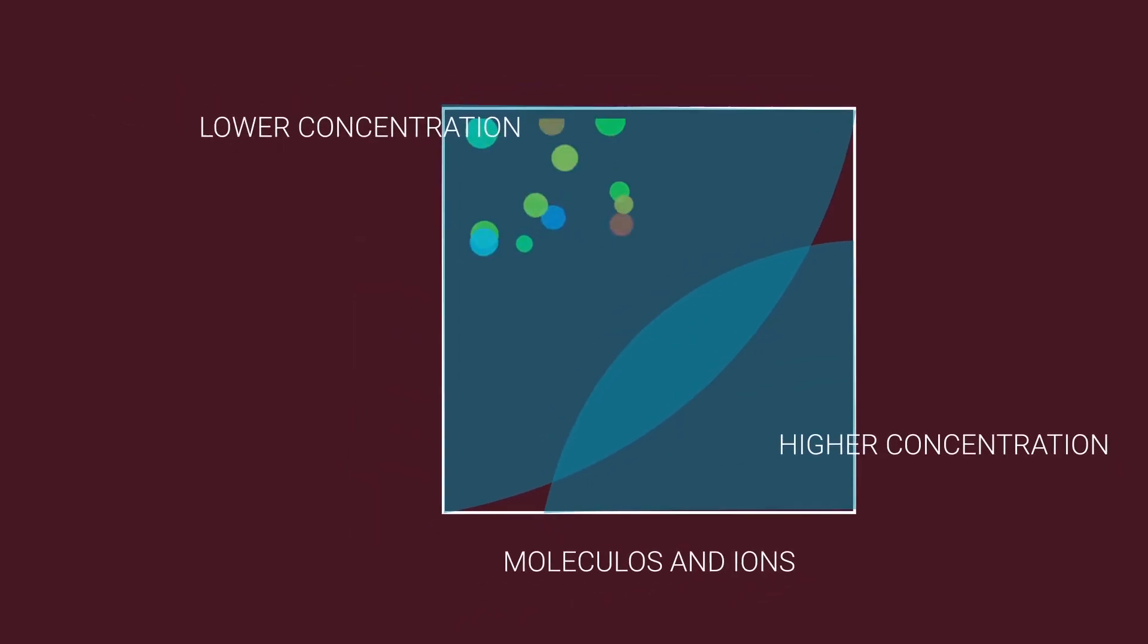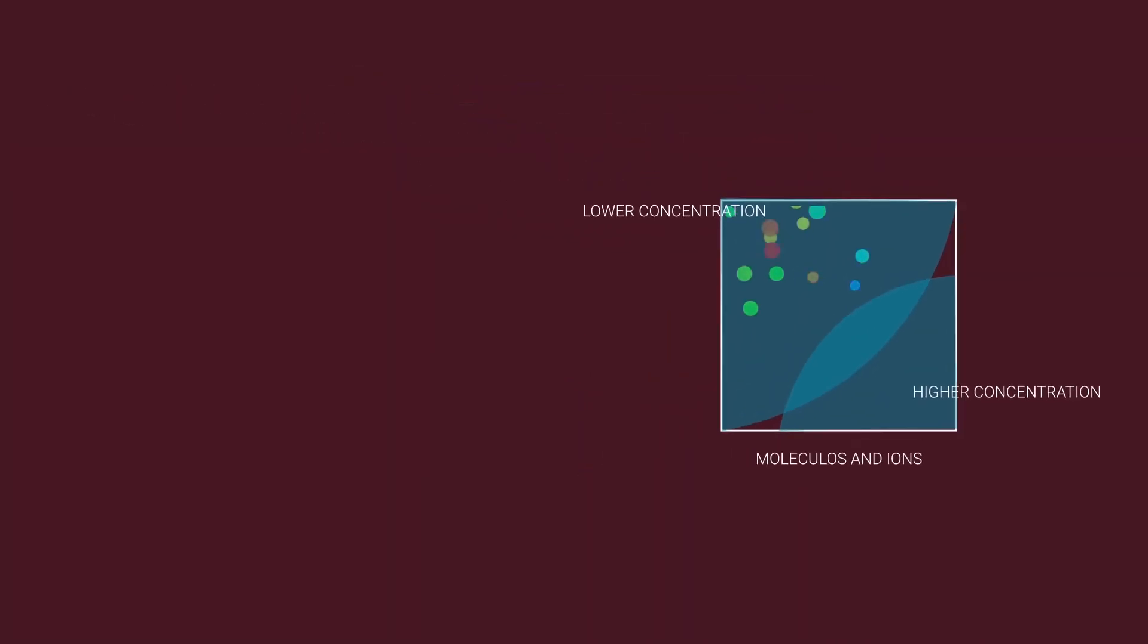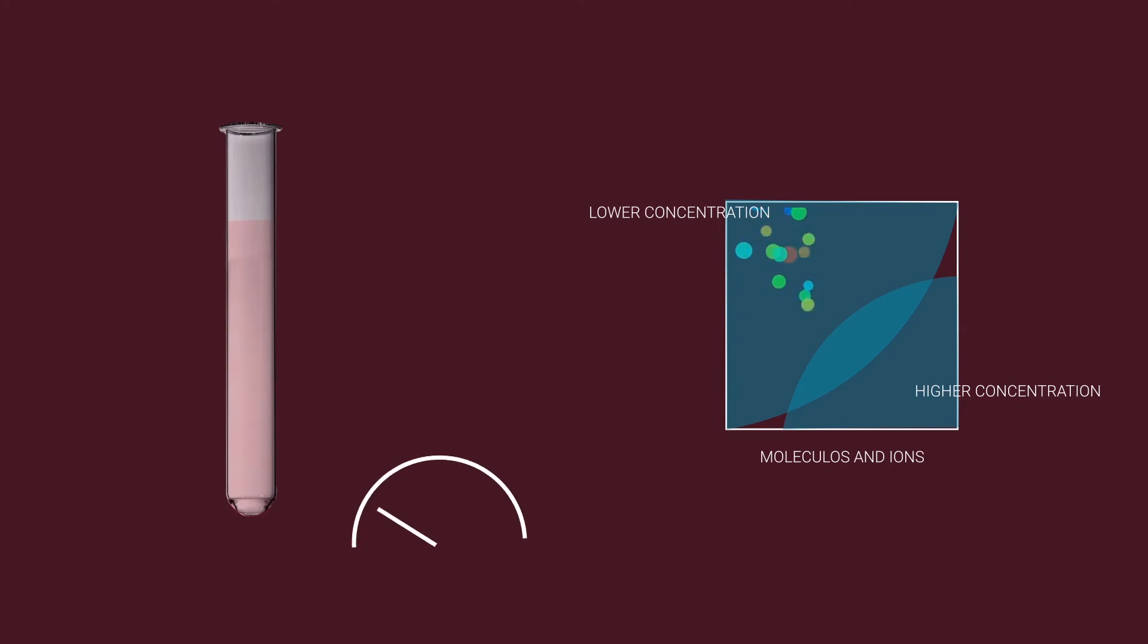The low temperature water remains colorless and the intensity of red color increases with the increase in temperature. The red color is due to the diffusion of the anthocyanin pigments from the cell sap into the water.